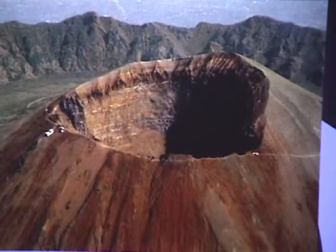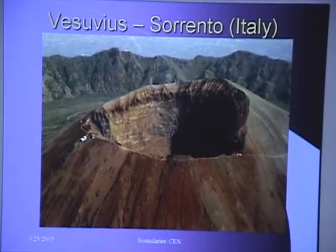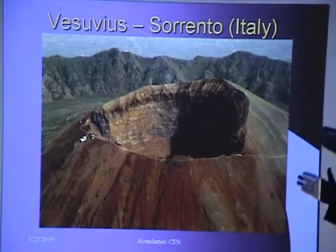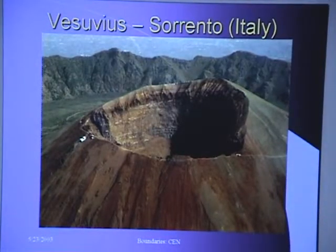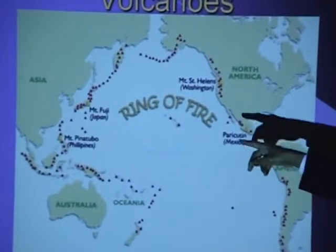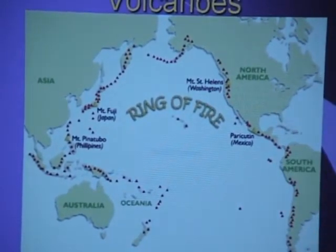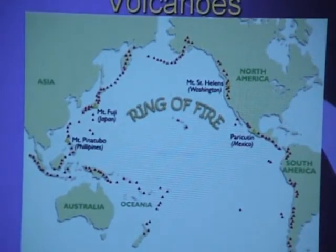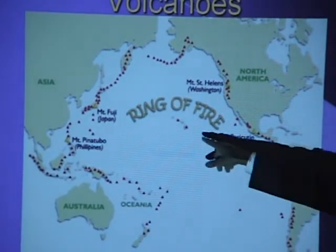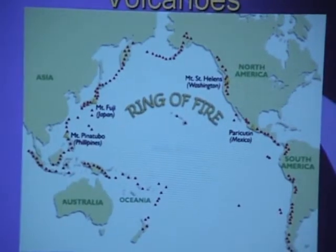We also have volcanoes. Here is Vesuvius from Italy, in a place called Sorrento near Naples, south of Rome — beautiful to look at if you visit Italy. If you wonder how many volcanoes there are and where, every triangle on this map is a volcano. They're all around the Pacific, so we call the Pacific the 'Ring of Fire.' And right smack in the middle of the Pacific, the wonderful place called Hawaii.